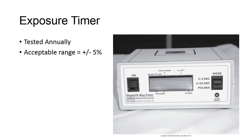Exposure timer accuracy can be checked with an ion chamber or photodiode device. If the exposure timer set at the control panel isn't accurately producing an X-ray beam at the set time 100% of the time, then actual exposure values may vary from what the technologist sets, leading to potentially incorrect exposure values for each exam and causing unnecessary repeat exposures and increased dose to the patient. There is a plus or minus 5% variance allowable, and this should be checked annually.